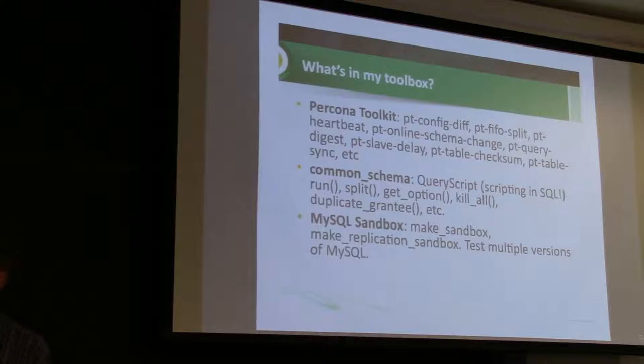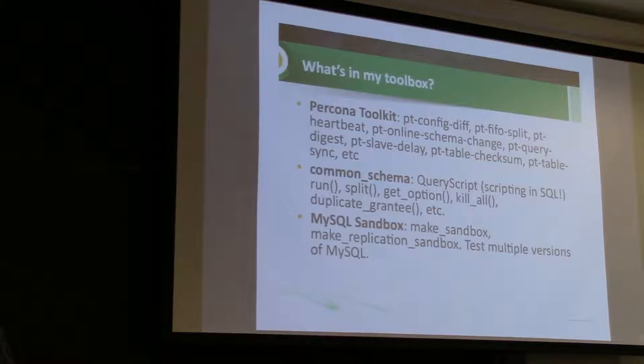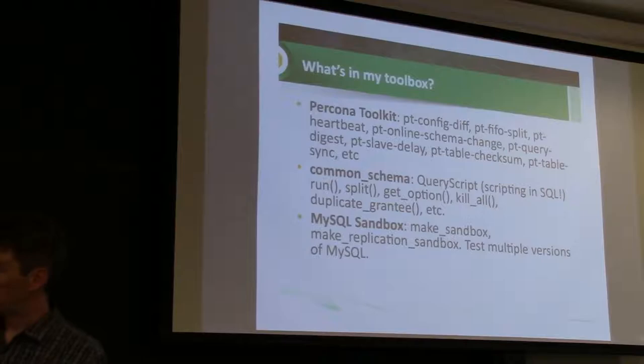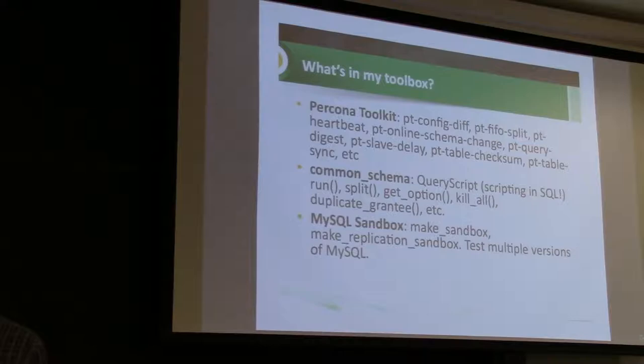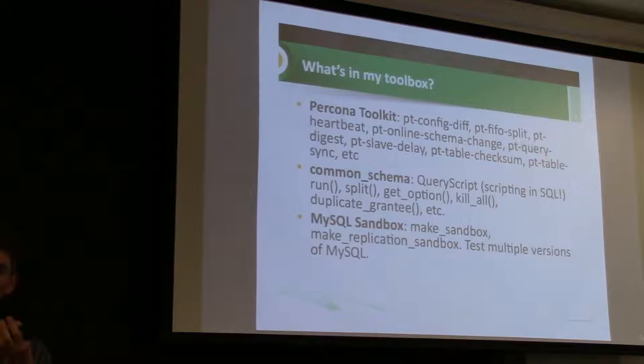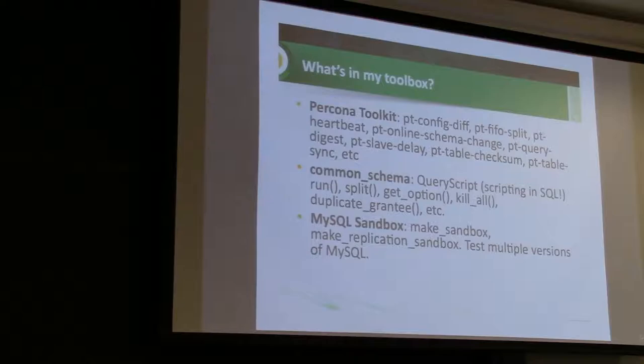pt-online-schema-change has been really important, though as people upgrade to 5.6 with online DDL it's a little bit less critical. But it's still a really cool tool. If you're doing an ALTER TABLE that's going to add a column to a 100 gigabyte table and it's going to take 20 hours to run, that table is essentially locked while you're doing that. pt-online-schema-change helps you get around that and do online DDL. It creates a copy of your table, uses triggers to keep the two tables in sync, makes the schema change on the copy, and once all row data is updated it uses an atomic rename to swap out the tables.